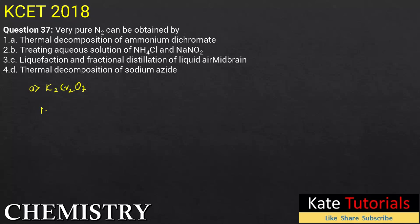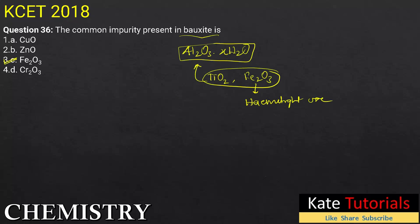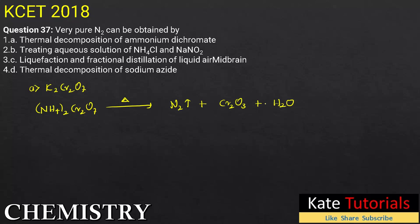If we decompose ammonium dichromate on heating, it will break down to give N₂ gas, along with Cr₂O₃ and liberation of water — around four water molecules will be liberated. So this is how thermal decomposition of ammonium dichromate yields nitrogen gas.